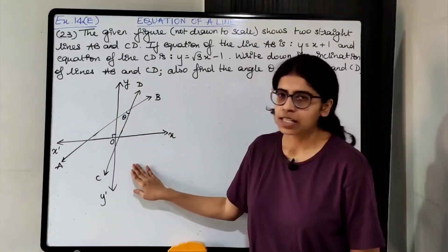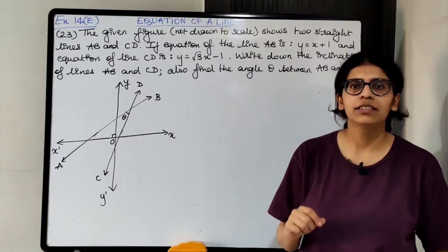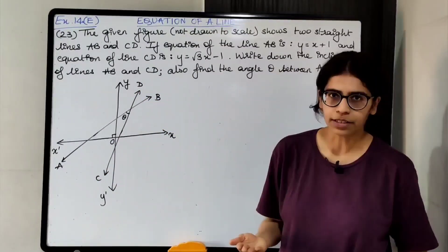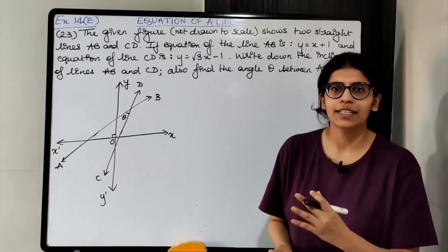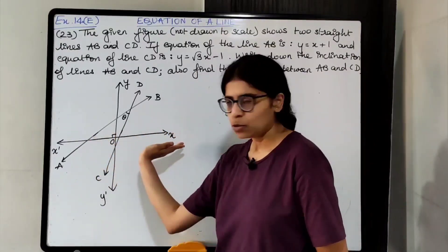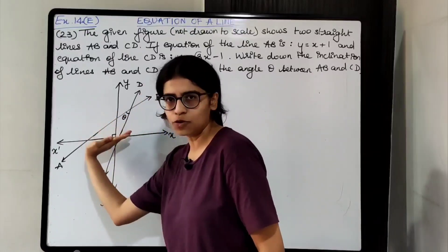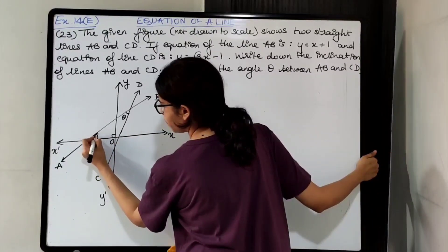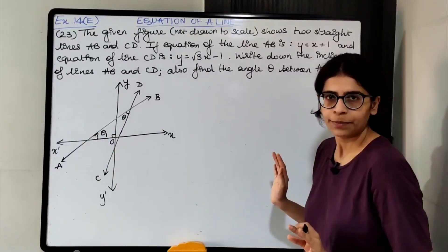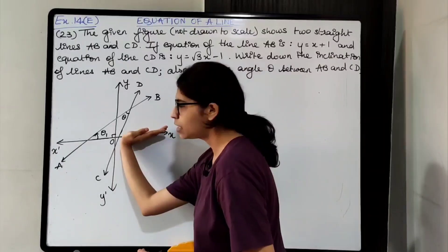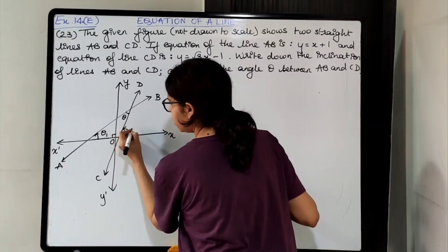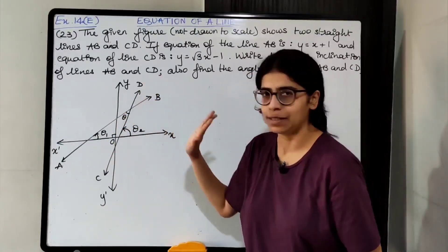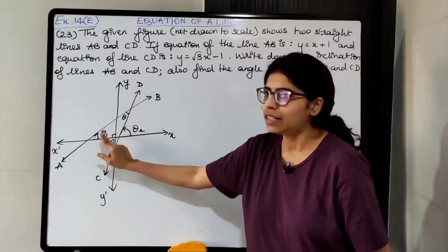It is a very easy question. First, we have to find the inclination of lines AB and CD — that is, the angle they make with the positive x-axis. Let theta 1 be the inclination of AB and theta 2 be the inclination of CD. Then we need to find theta, the angle between AB and CD. Let's first see how to find theta 1 and theta 2.